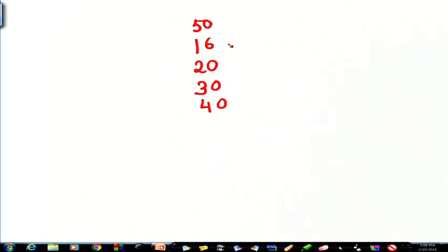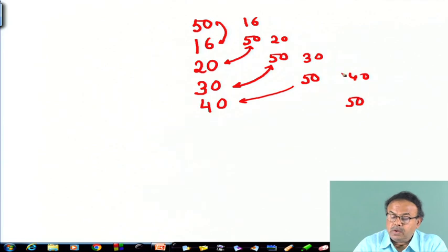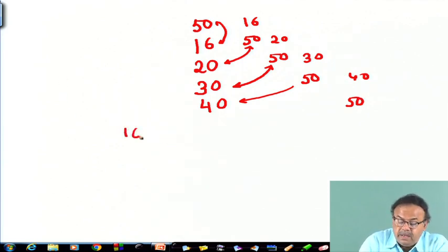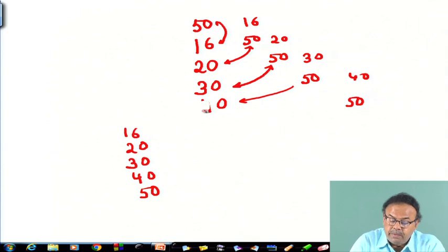After the first pass, comparing 50 with each element, 50 drops to the bottom. The array becomes 16, 20, 30, 40, 50. In this case many elements were already in order so only one was out of place and it has been fixed in one pass.